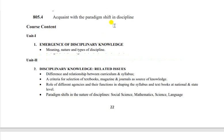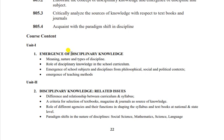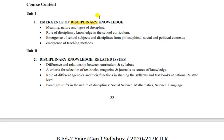Is subject mein thoda sa cheezein zyada samajhni padti hain. Jab tak aap discipline ko nahi samajhenge - yahan discipline ka matlab bata deti hoon - kai baar isko galat tarike se le lete hain. Log isko school discipline wala, strictness wala, punishment wala samajh lete hain. Lekin yeh woh discipline ki baat nahi ho rahi - yahan baat hoti hai academic discipline ki. Jaise IGNOU mein ya college mein credits ke baare mein suna ho - disciplines kaun-kaun se hote hain - woh wale disciplines ki yahan baat hoti hai, na ki strictness wala discipline.